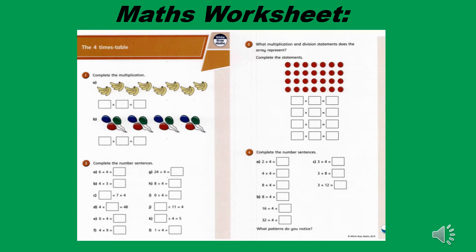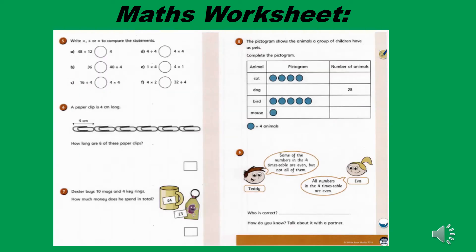Please read them through and find out what the missing number is. For question three, we have got an array. Please have a look at your array and see the different ways that we can represent this in a multiplication and a division question. We are continuing on with our multiplication and division. In question five, it's asking you to use the less than, the greater than, and the equal symbol to compare the statements. Put the relevant symbol into those empty circles.